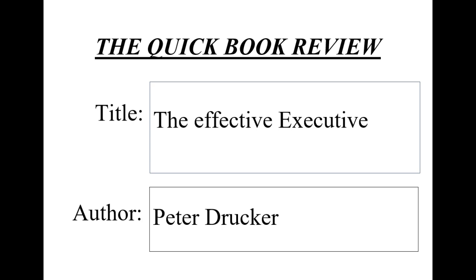In this book, Drucker explores the key characteristics and habits of effective executives, and provides practical advice for how to become one. One of the main themes of the book is the importance of focus and prioritization in achieving success. Drucker argues that effective executives are able to identify the most important tasks and activities and allocate their time and energy accordingly. This requires a clear understanding of one's own strengths and limitations, as well as an awareness of the broader context in which one operates.